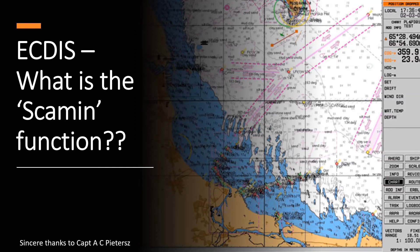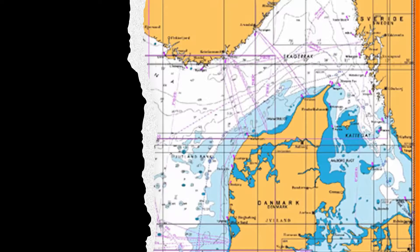SCAMIN also stands for Scale Minimum. Scale Minimum — an acronym or short form of Scale Minimum — is the SCAMIN function. What is this used for? The SCAMIN function or the SCAMIN value of an object determines the display scale below which the object is no longer visible on the ECDIS.